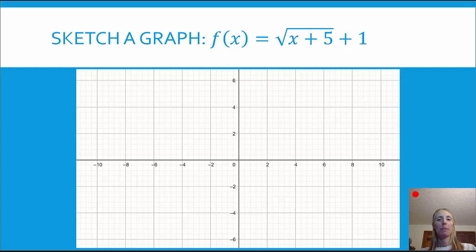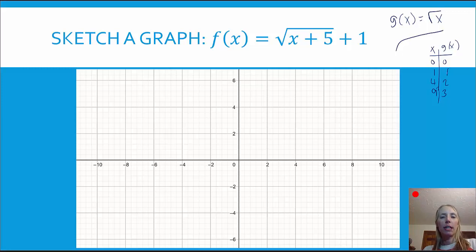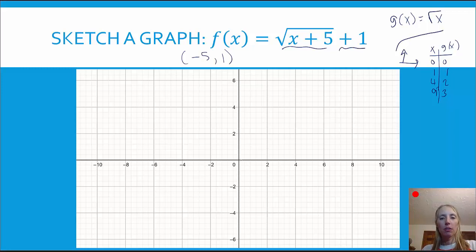In this example, f(x) equals the square root of (x + 5) plus 1. Our parent function g(x) is equal to the square root of x. Some key points for the square root function: it starts at (0, 0), then (1, 1), (4, 2), and (9, 3) — you want to choose x values that are perfect squares. For the transformed function, we're shifting the graph to the left 5 units and up 1 unit, so instead of starting at (0, 0), this graph starts at (-5, 1).